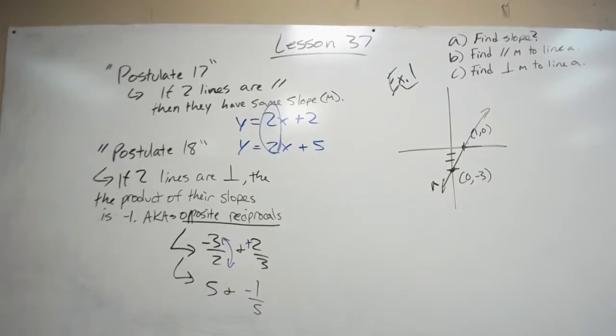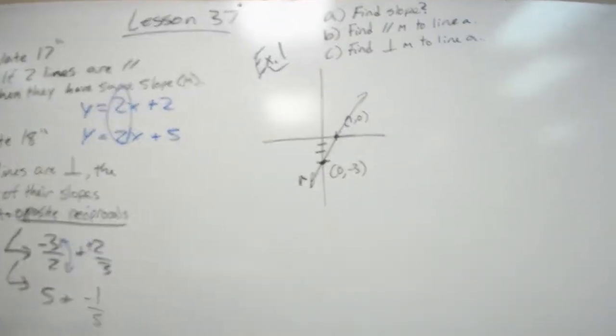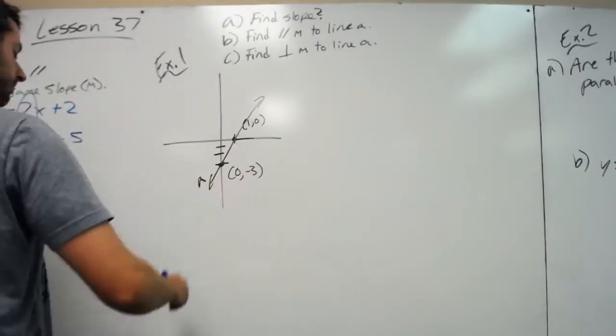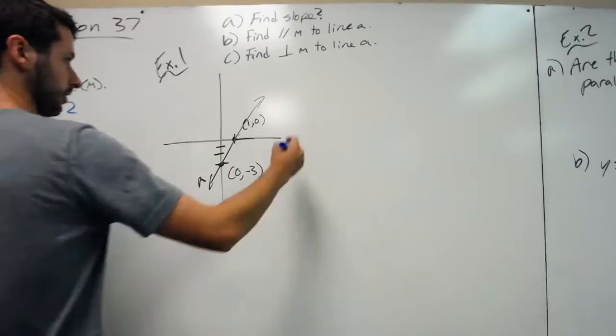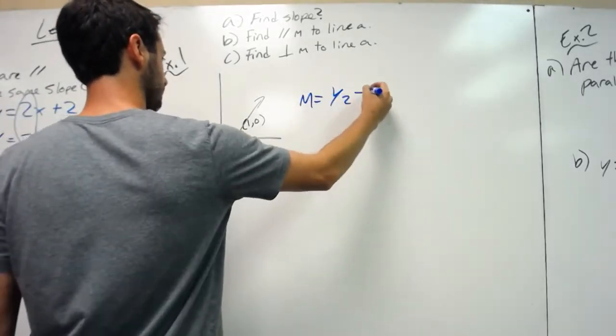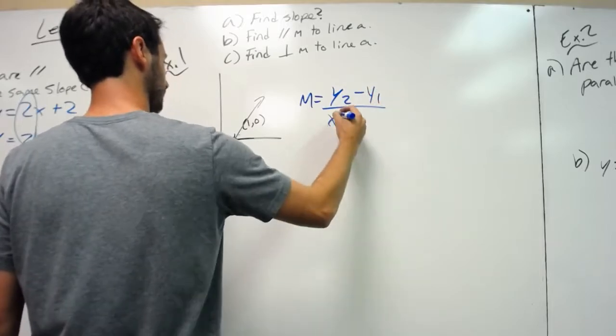Let's look at example 1. We'll do all three parts, A, B, and C. First, it wants us to find the slope of this line. The slope formula, hopefully we know it by now, is y2 minus y1 over x2 minus x1.